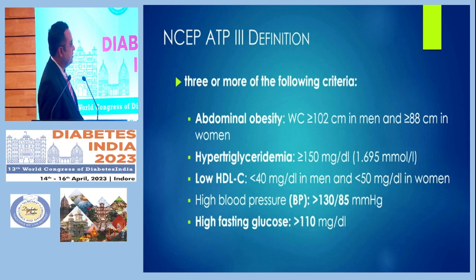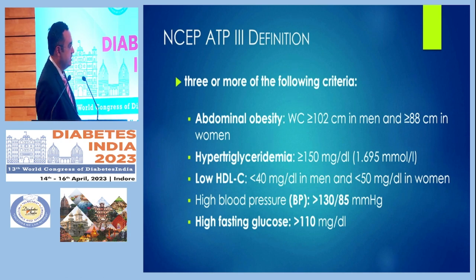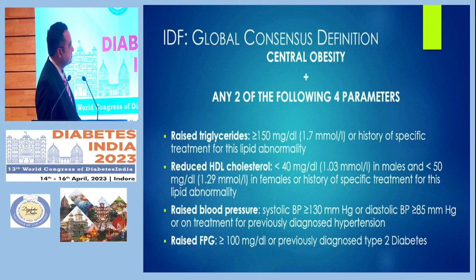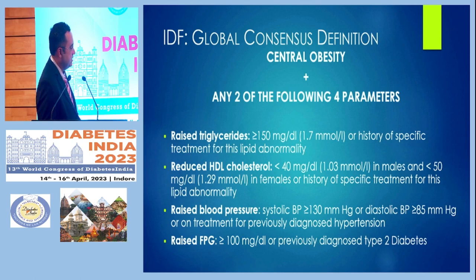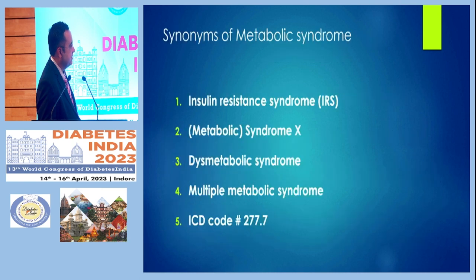Similarly, you can take the KTB definition where two out of three or more of the criteria are required — abdominal obesity, hypertriglyceridemia, low HDL, high BP, and high fasting blood sugar. Even if you take the IDF definition, it takes central obesity as the core criteria and requires any two of the following: raised triglycerides, low HDL, high blood pressure, and raised fasting blood glucose.